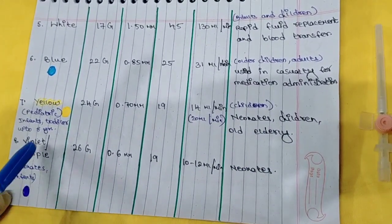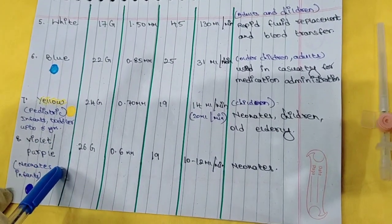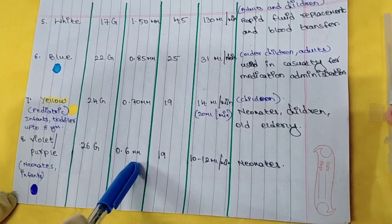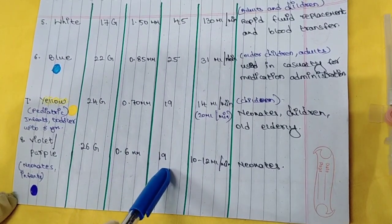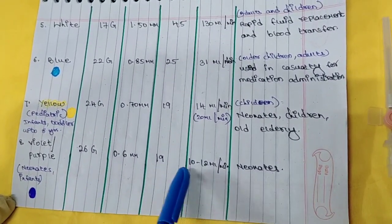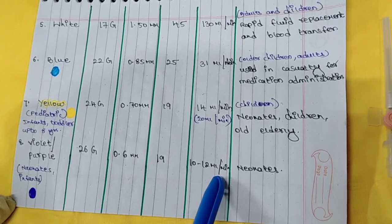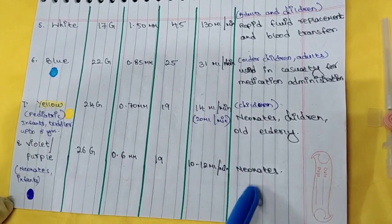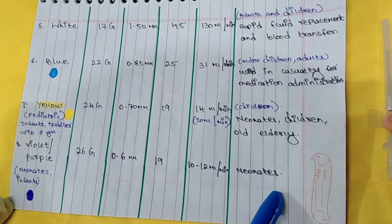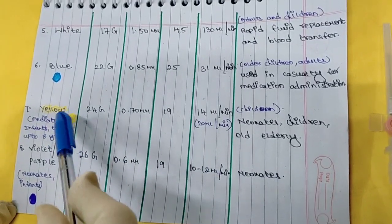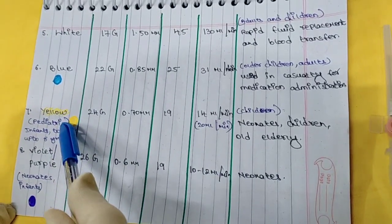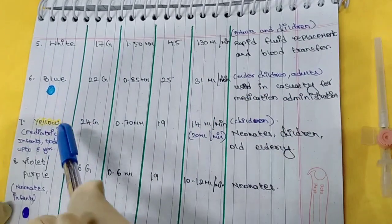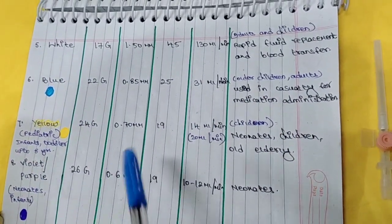Then the last one is the violet or purple cannula, which is 26 gauge. The outer diameter is 0.6 mm and the catheter length is 19 mm. The flow rate is 10 to 12 ml per minute, and this is used mostly in neonates and infants. So we can say that yellow and violet or purple cannulas are pediatric cannulas, mostly used in pediatrics.